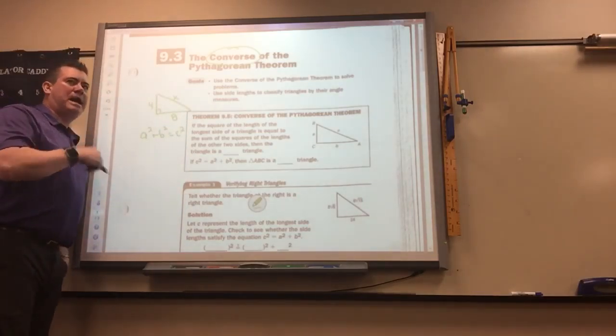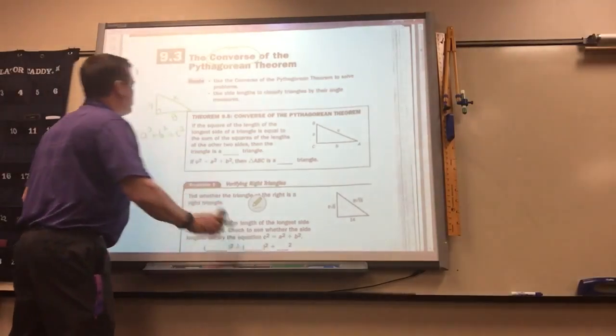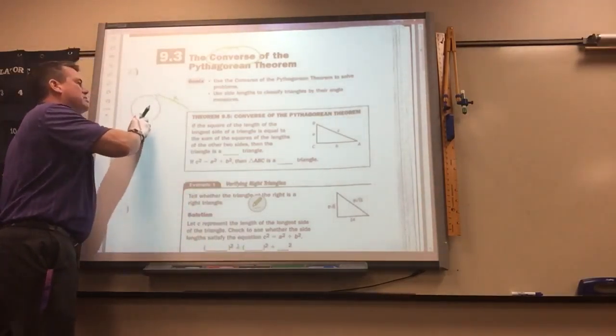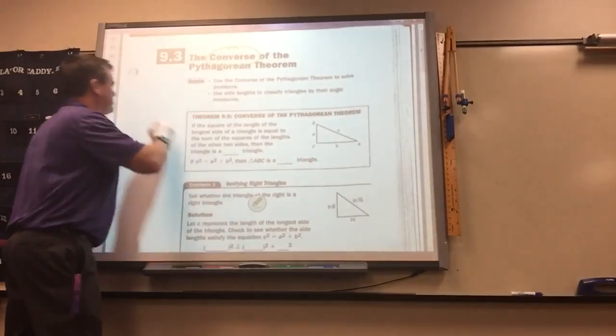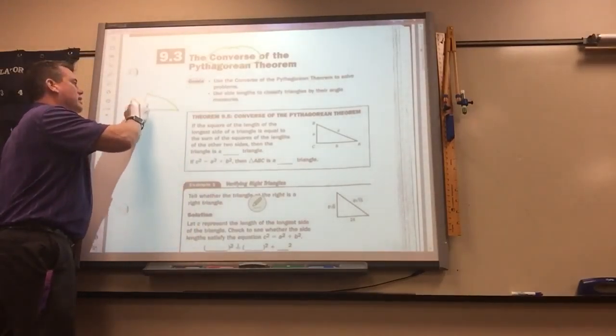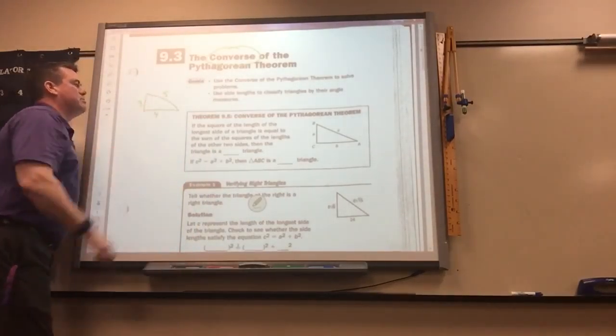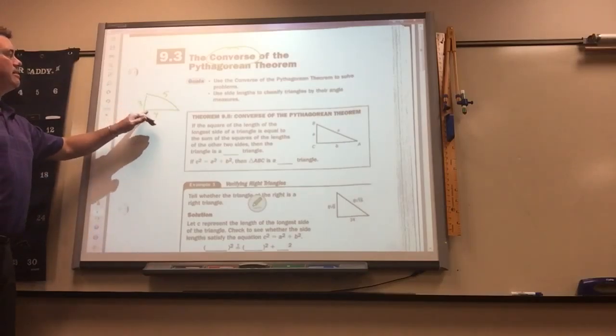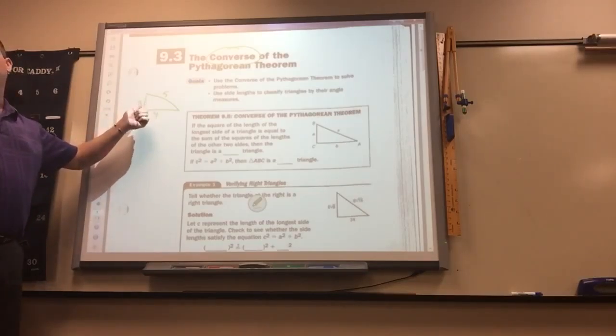So you could use a squared plus b squared equals c squared to find the missing side. The converse is backwards. Now we're going to have three sides and you're going to use the Pythagorean theorem to figure out if it's a right triangle or not.